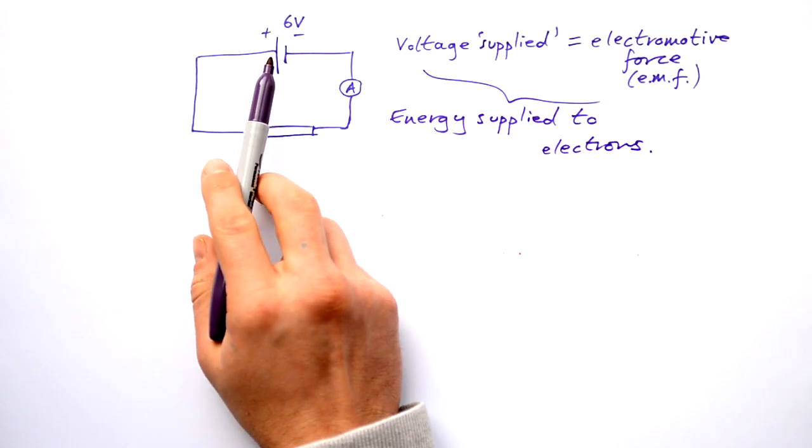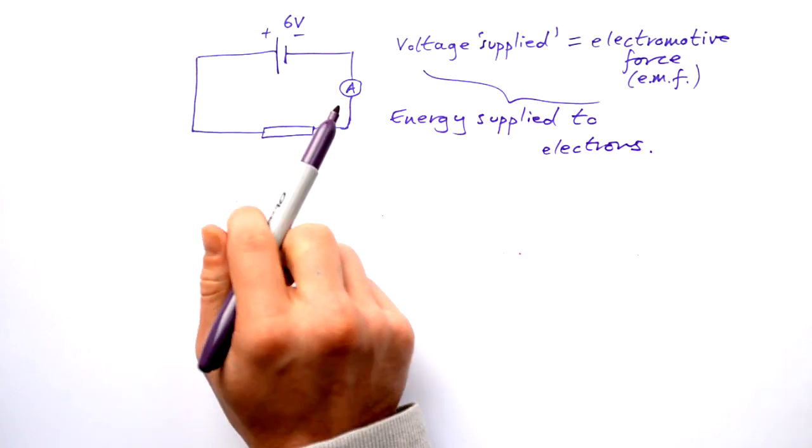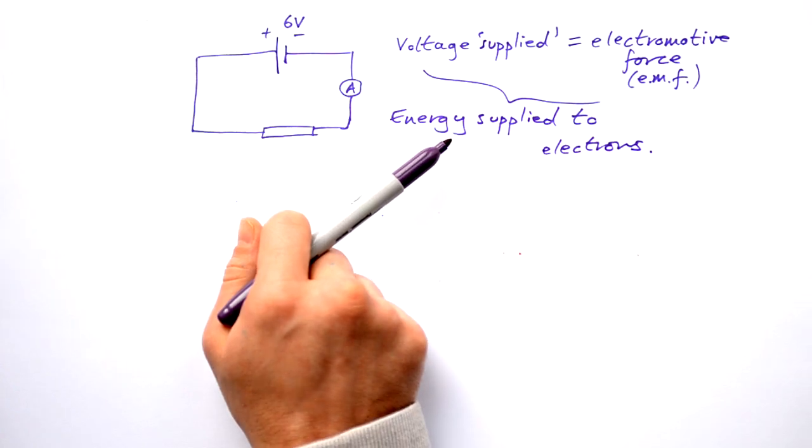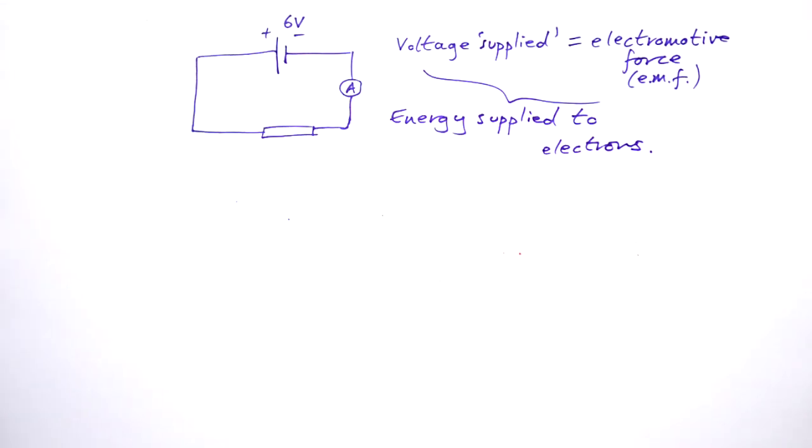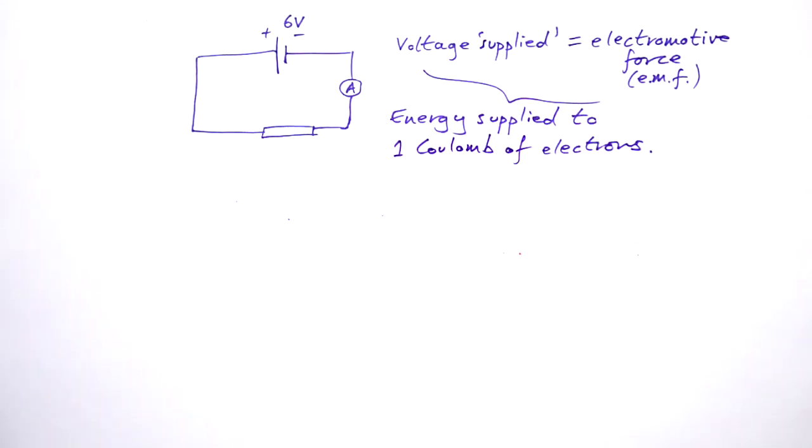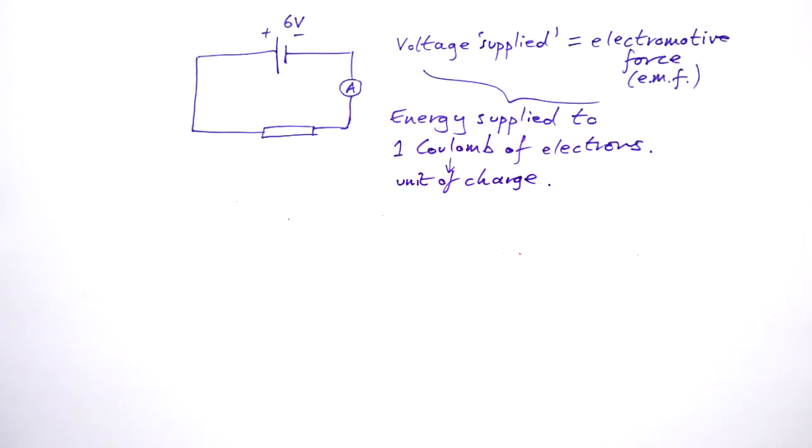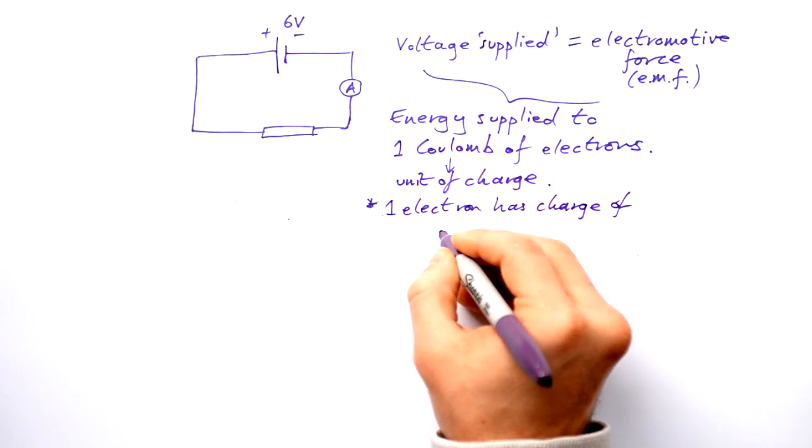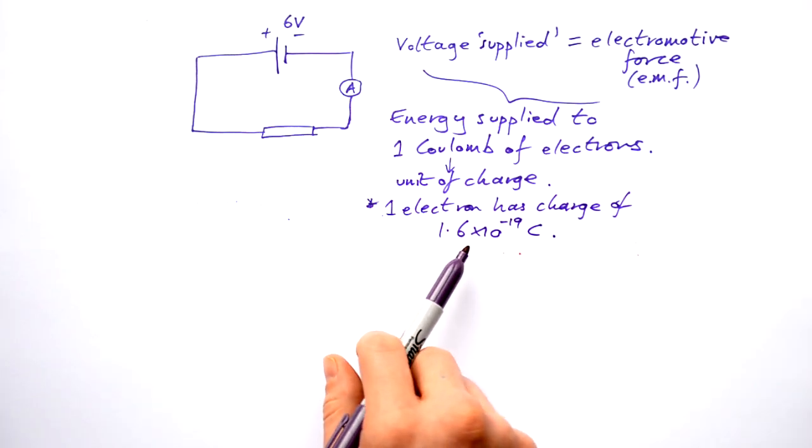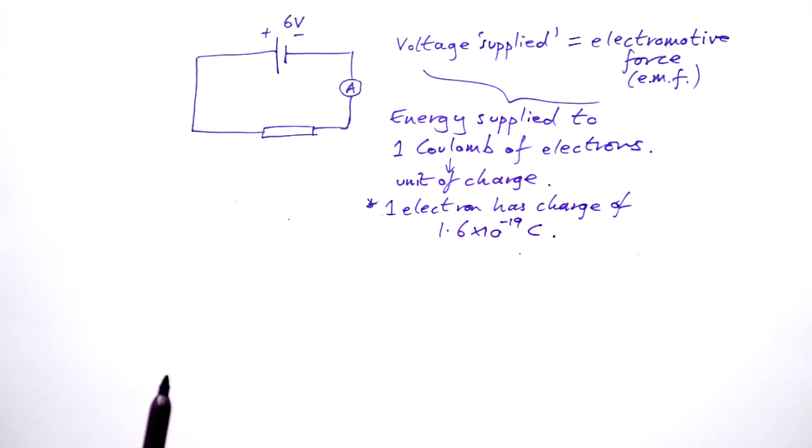We know that if there wasn't a battery here, then electrons wouldn't be flowing around the circuit. But there is a battery which gives the electrons energy and that enables them to flow around the circuit. But the thing is, is that we have billions of these electrons going around the circuit. So it's not very good to talk about the energy supplied to an individual electron. So we say energy supplied to one coulomb of electrons. Coulomb is the unit of charge.